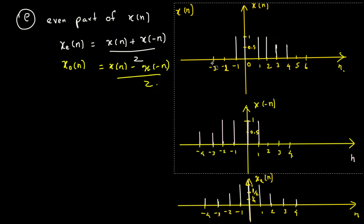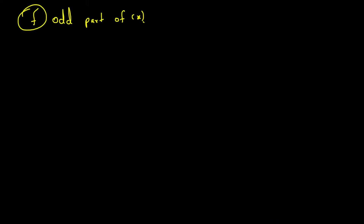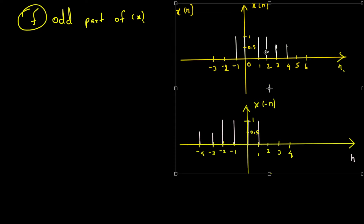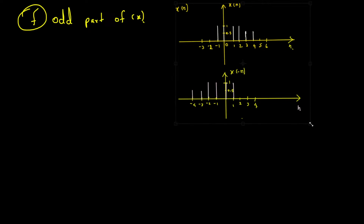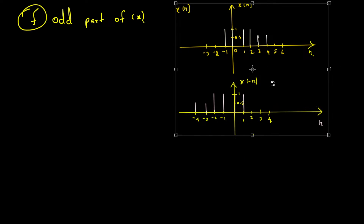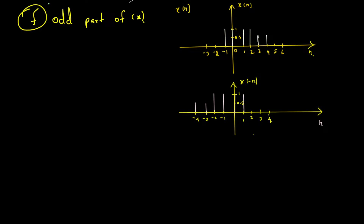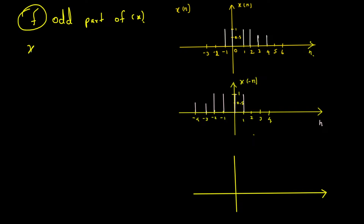I can derive the odd function from this. I'll copy and paste here, make it small so I can draw the third graph and do the calculation. The equation for the odd part of x of n is: odd part = x of n minus x of minus n, divided by two.